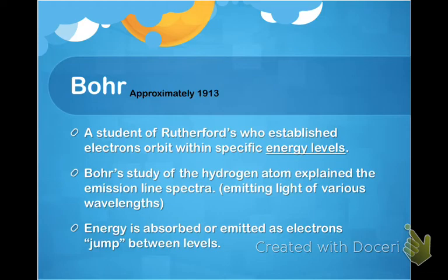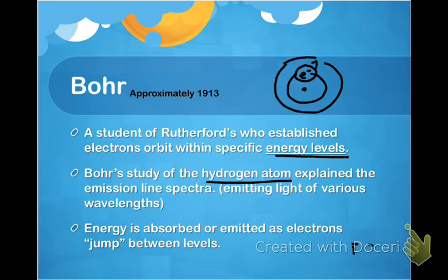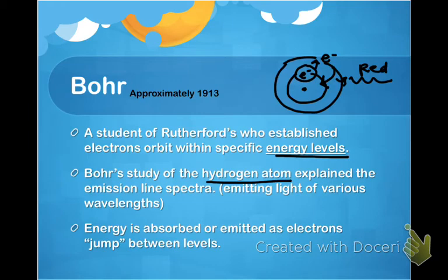Rutherford had a student by the name of Niels Bohr. Approximately in 1913, Bohr established that electrons orbit with specific energy levels around the nucleus. Bohr specifically studied the hydrogen atom and explained the emission line spectra. Hydrogen has one proton and one electron, and as you excited the hydrogen gas, the electron would jump between energy levels — absorbing energy going outward and releasing colored light such as red, blue, or green light when falling back down.